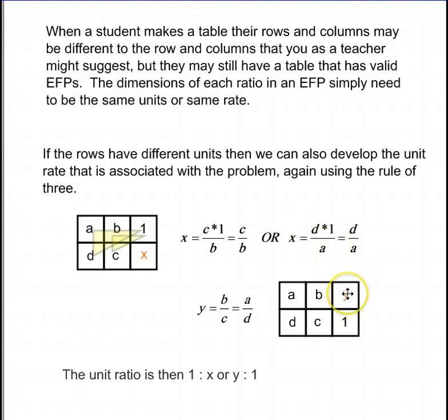Similarly for y here, y equals b times 1 over c, which is just b over c, or y equals a times 1 over d, so that's a over d. There it is. The unit ratio is then 1 is to x or y is to 1.